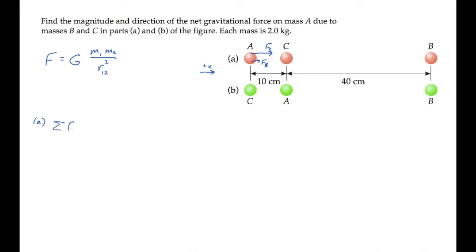So the net force equals the force from mass C plus the force from mass B. We can substitute the expression from above, factoring out the common mass A from each term to get this expression, where in each case the denominator is the distance between mass A and the other mass.